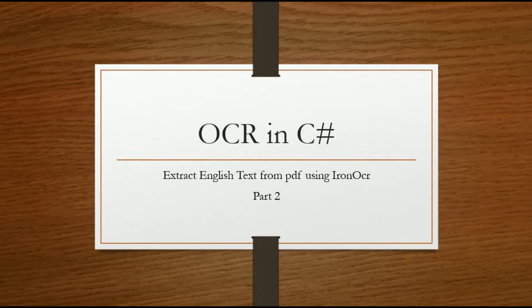Assalamu alaikum, welcome to my channel Code Seekers. This is part 2 of my videos on making an OCR in C#. In part 1, we learned how to make an OCR using the Iron OCR library to extract text from pictures. Now in this part, we will learn how to extract English text from a PDF file using Iron OCR.